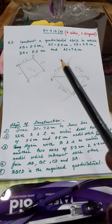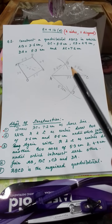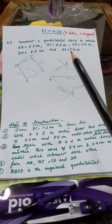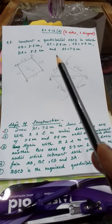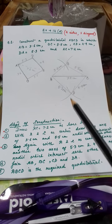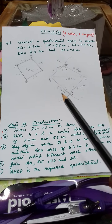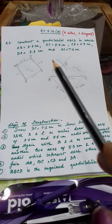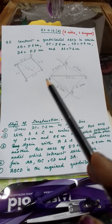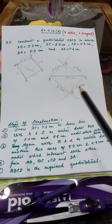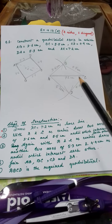After the arcs have intersected each other, you will join the points. One important thing to be very clear about: the arcs must intersect each other. Until and unless the arcs intersect each other, the quadrilateral cannot be constructed.